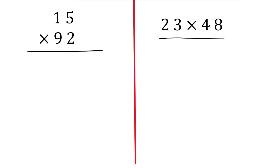Hello friends, in this video we will learn two-digit by two-digit multiplication. Here the numbers are written vertically. The top number is called the multiplicand and the below number is called the multiplier. You have to multiply each digit with the other number's digits.